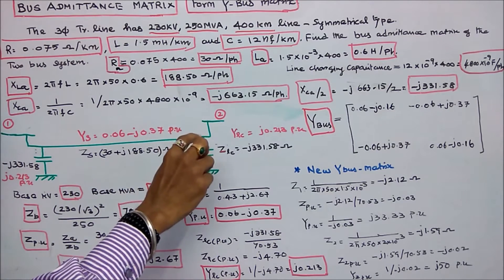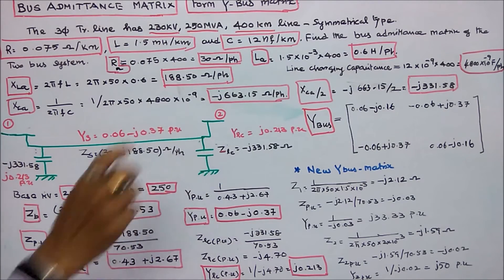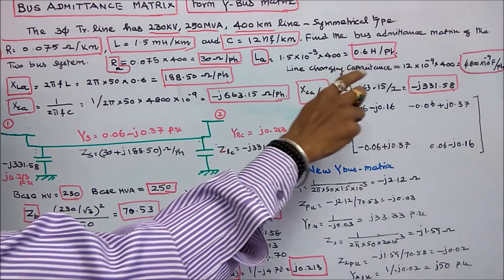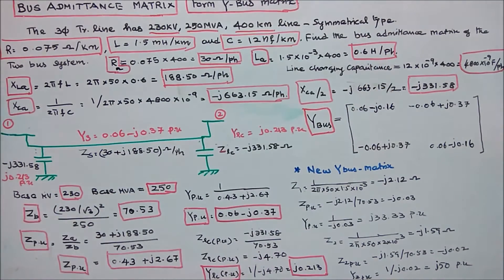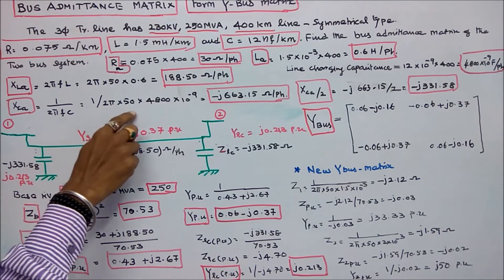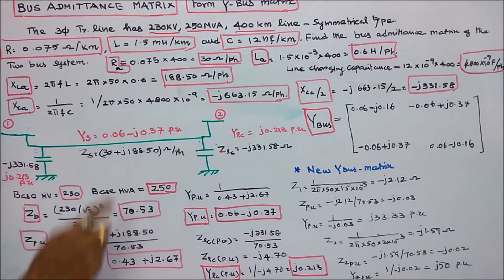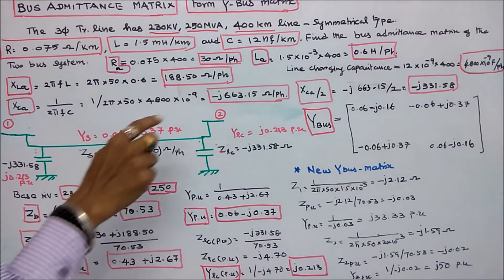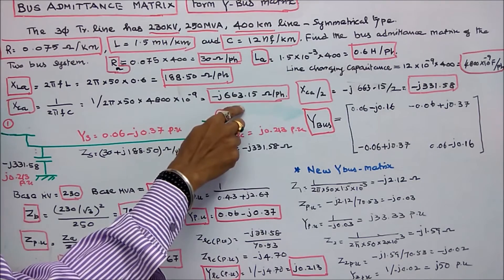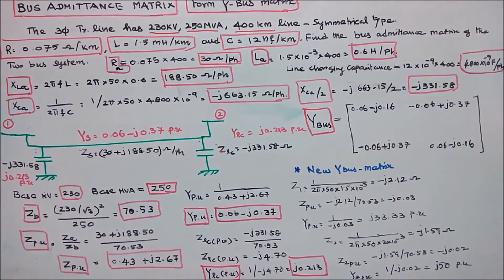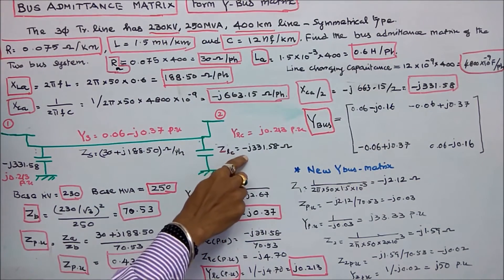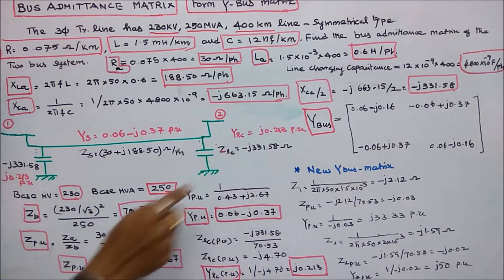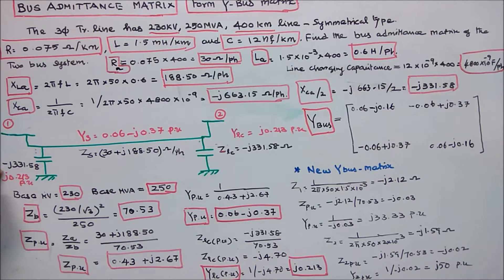The line charging impedance is 1 / (2π × 50 × 4800 × 10⁻⁹) = −j663.15 ohms per phase. Divided by 2, that is −j331.58 ohms per phase for each shunt element.